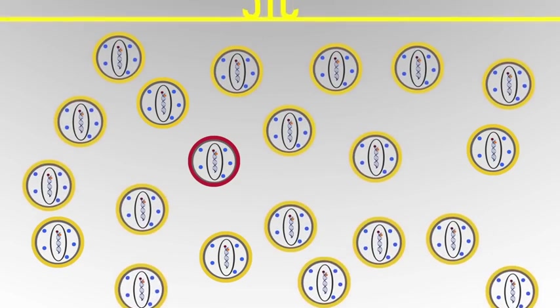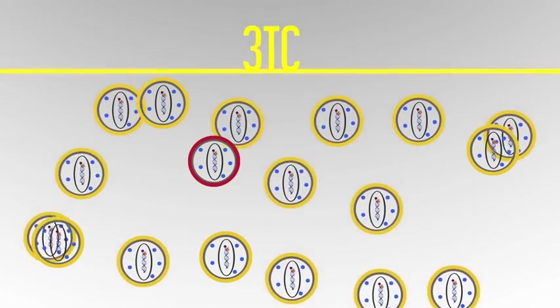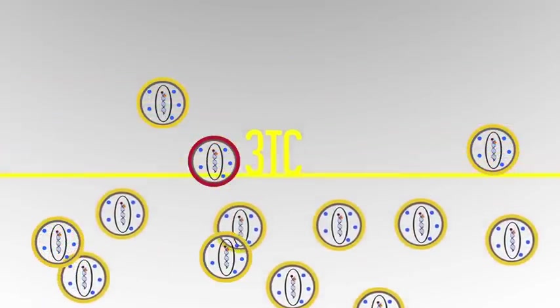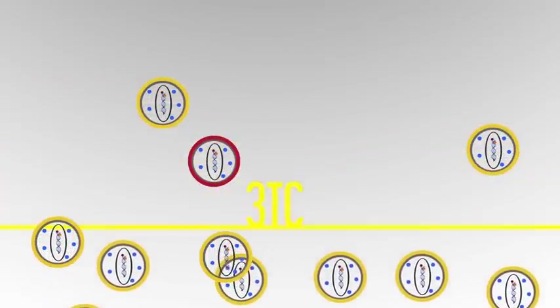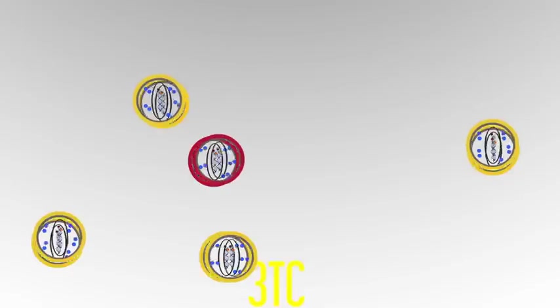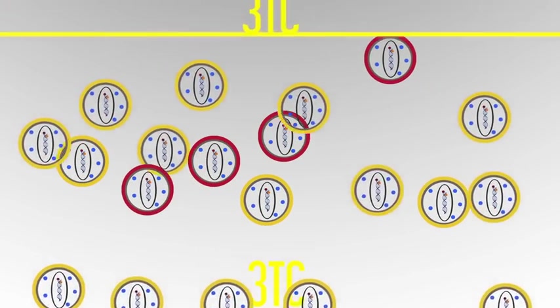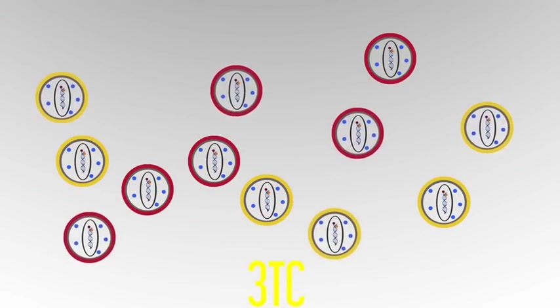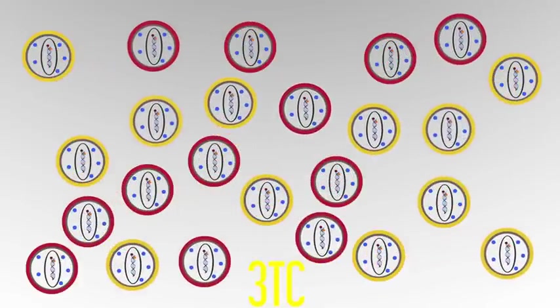If we then gave 3TC on its own, which we never do, but if we did, that 3TC would suppress the yellow viruses because it can get into that reverse transcriptase and inhibit that reverse transcriptase, but it cannot inhibit the red viruses because it's got a conformational change that's keeping it out. That means that some months to days down the line you're going to have a pool of virus that is full of M184V and very few viruses that are actually sensitive to 3TC.